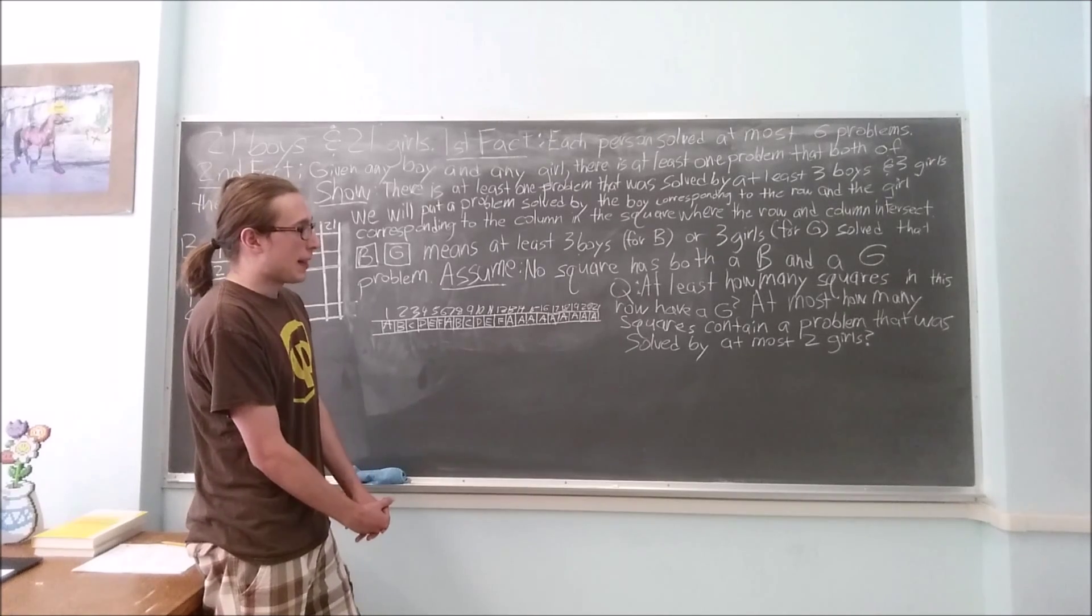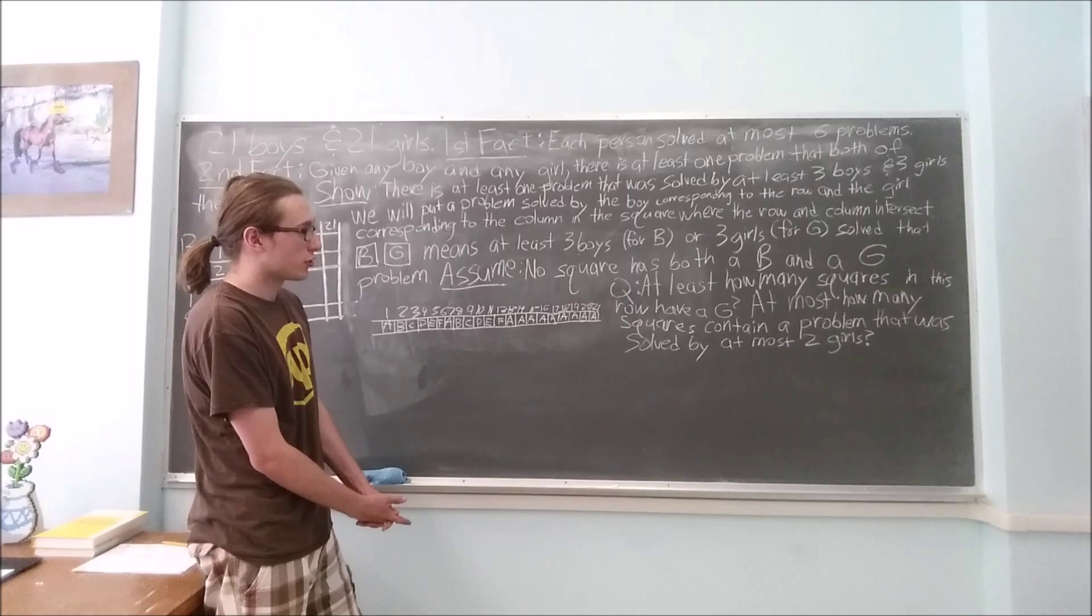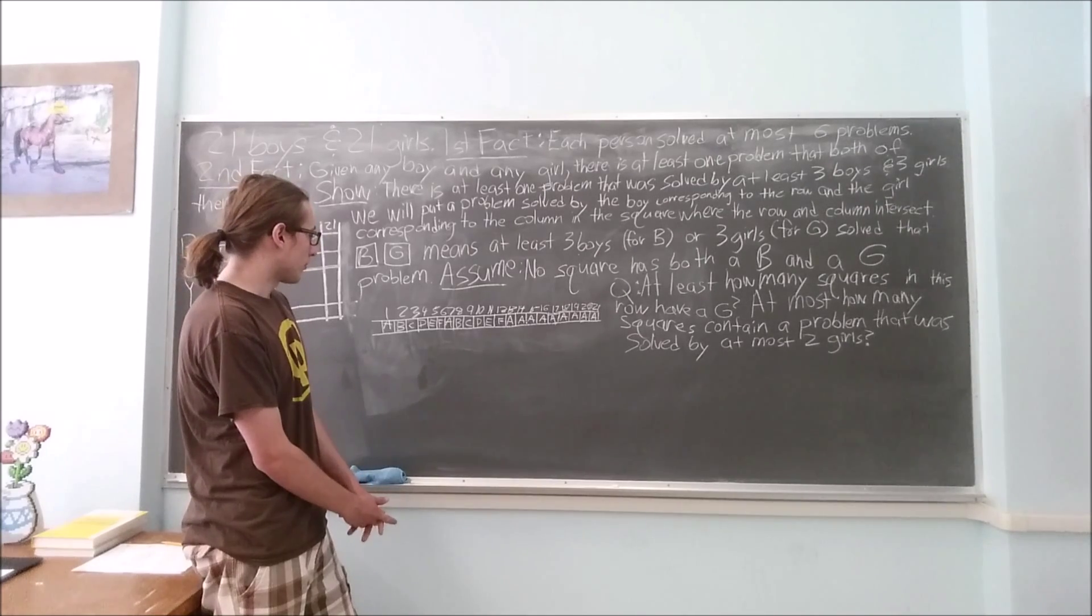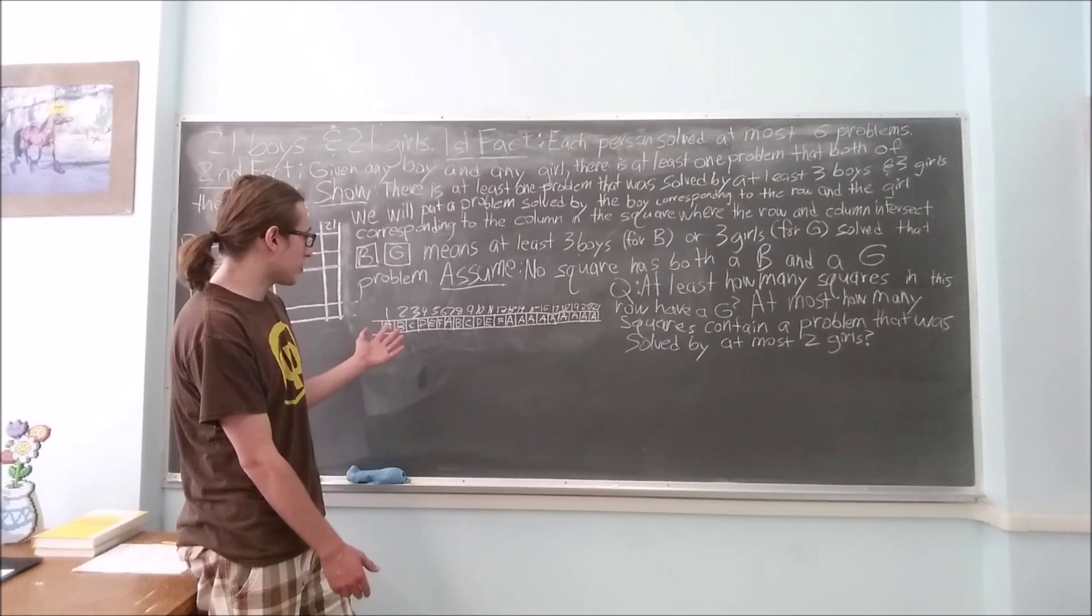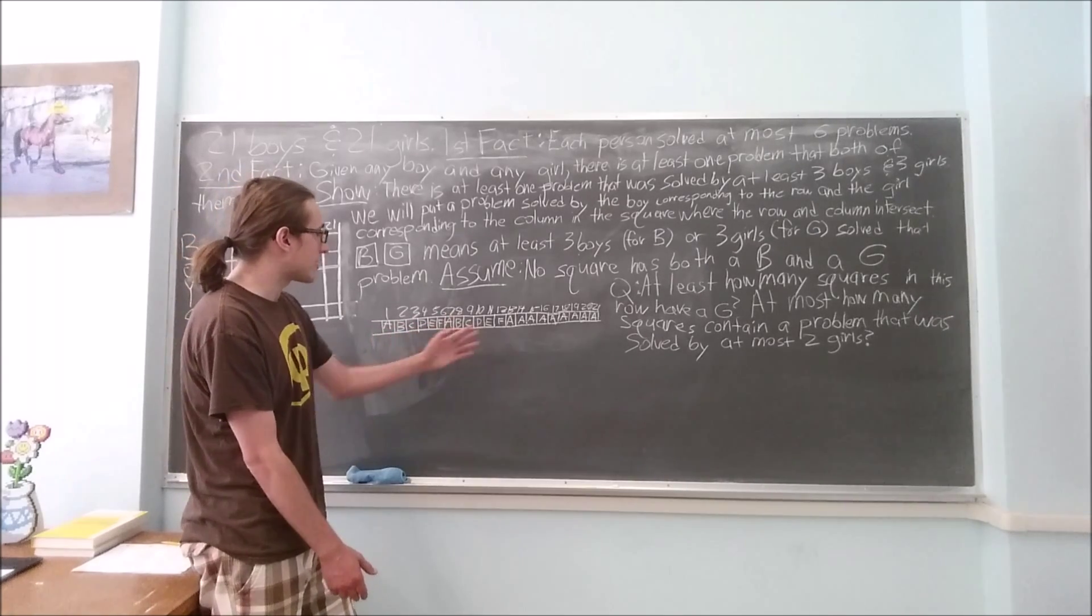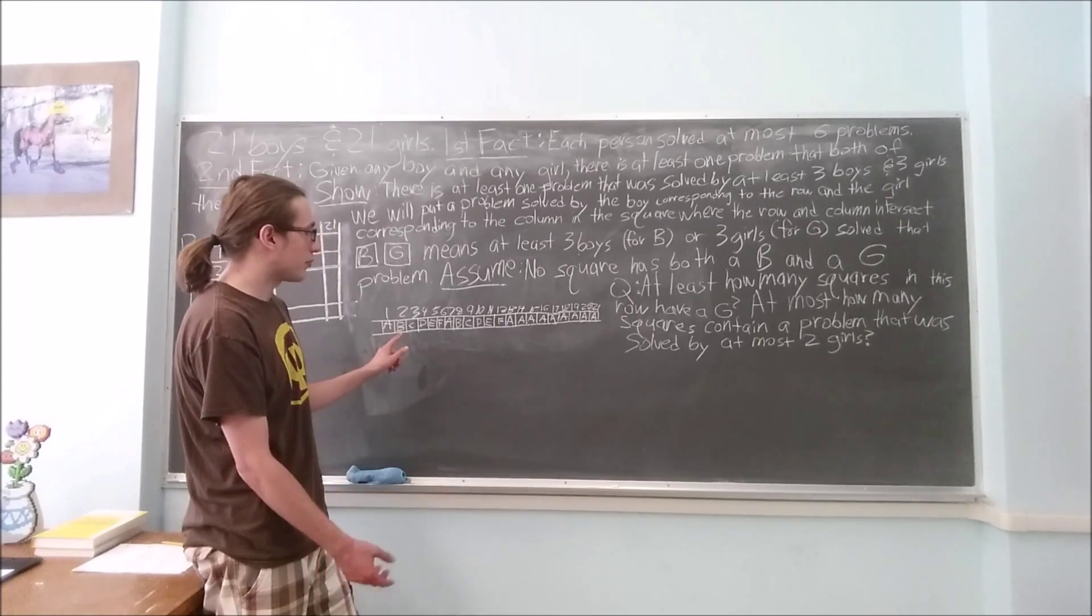The answer to the question of at most how many squares contain a problem that was solved by at most two girls, well, there were five problems that were solved by at most two girls, and each of those five problems I used twice. So, that equals ten squares.